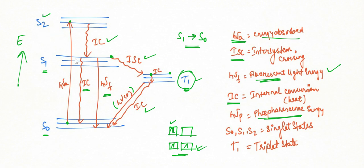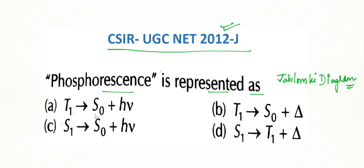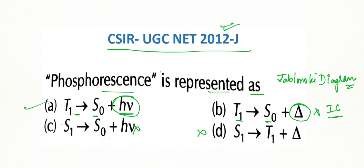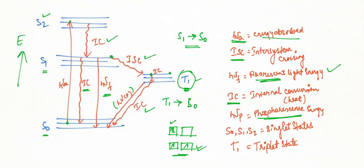So the question asked: what is the transition for phosphorescence? As we can see clearly, the transition is from T₁ to S₀. Options C and D are wrong. Option B says T₁ → S₀ with release of heat — but that would be internal conversion, not phosphorescence. Phosphorescence involves emission of light (photons, h-nu). Therefore, option A is the correct answer.